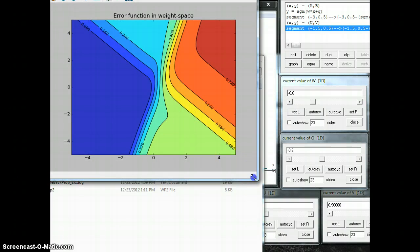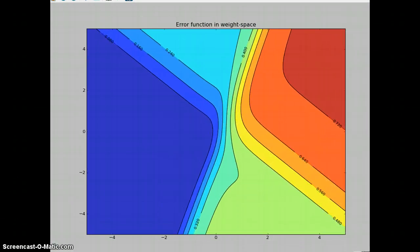So this is the error surface plotted this way for the two data points that we looked at in the previous video, for the exact same network as the previous video. So, along the x-axis, these are values of that single weight, W. But along the y-axis, vertically, we have different values of the bias.